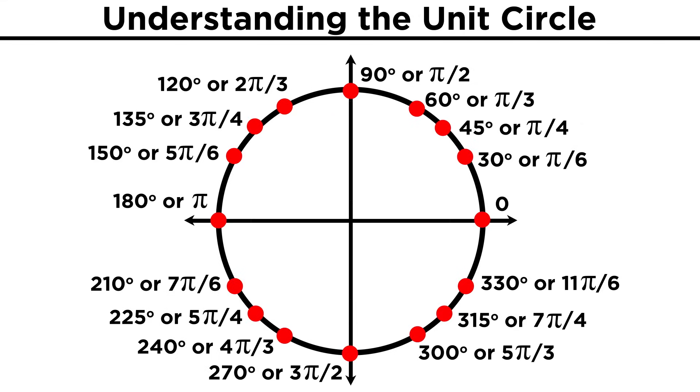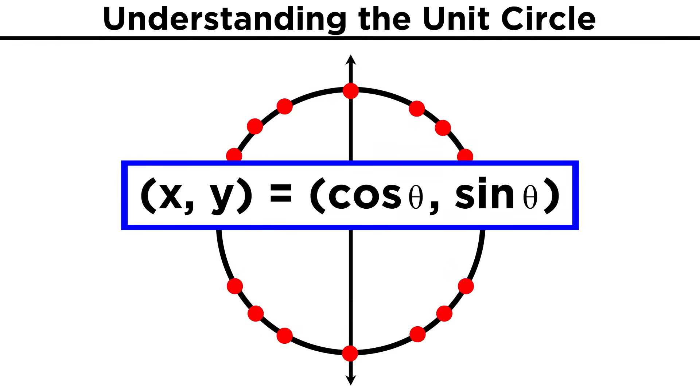For each angle on this unit circle, we are constructing a triangle by drawing a line from this point straight down to the x-axis. The hypotenuse of this triangle is the radius of the circle, which is always one, and the two legs are each some value less than one, depending on the angle. What we must understand is that every point on this unit circle has an x-coordinate equal to cosine θ, and a y-coordinate equal to sine θ.